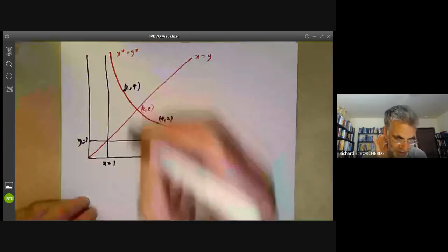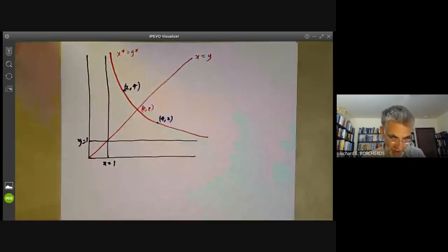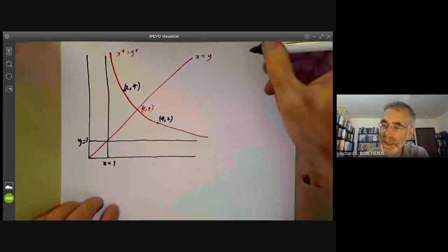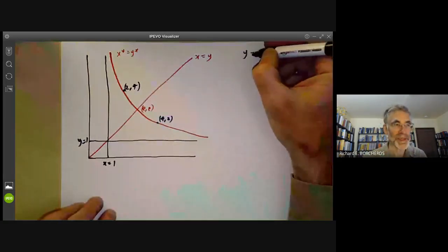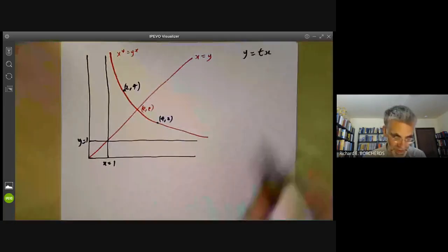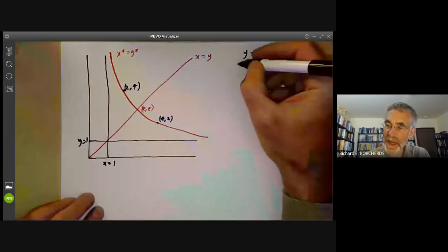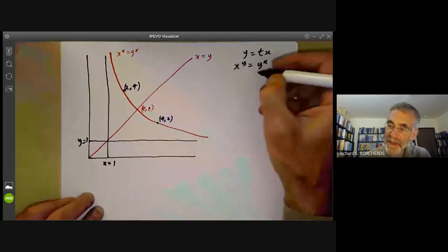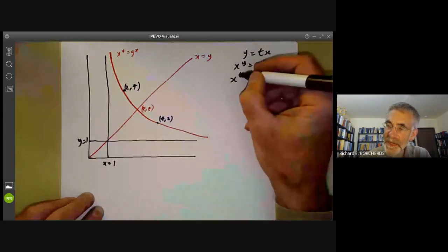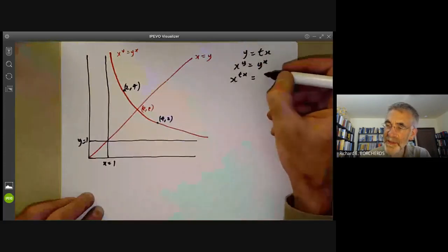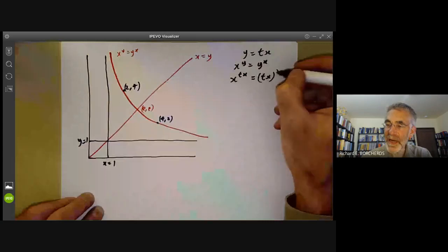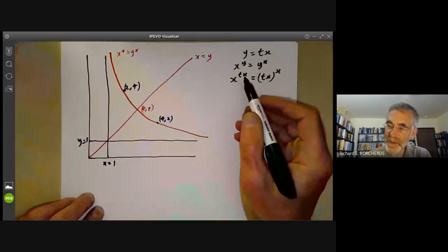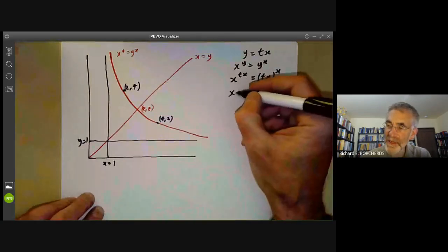There's an alternative algebraic solution we can give. What we do is we make the substitution y equals t times x, which is a very common and useful substitution. And then the equation x to the y equals y to the x becomes x to the t x equals t x to the x.